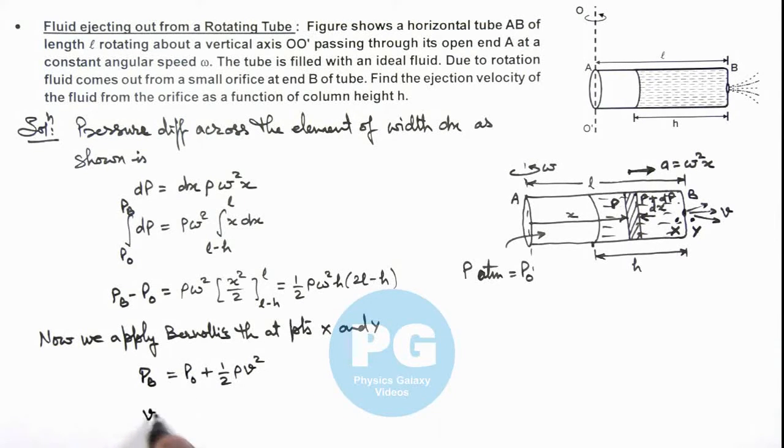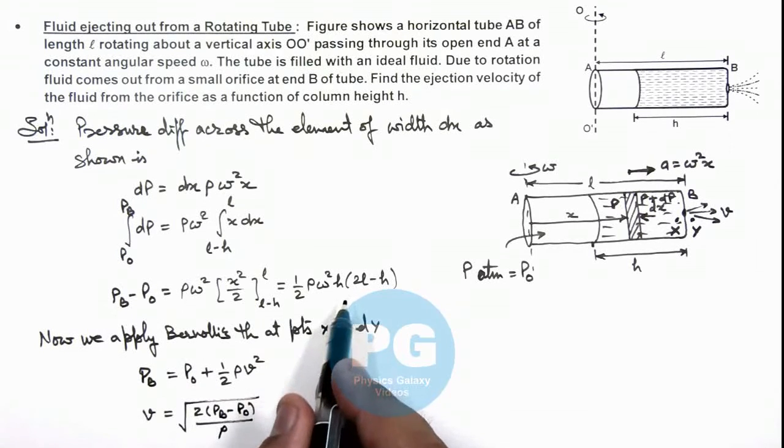we'll get the value of flux velocity to be equal to under the root twice of P_B minus P_0 divided by rho. And here we can substitute the value of P_B minus P_0 which we already calculated.